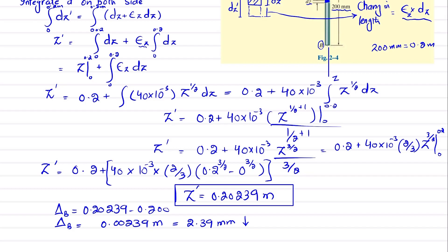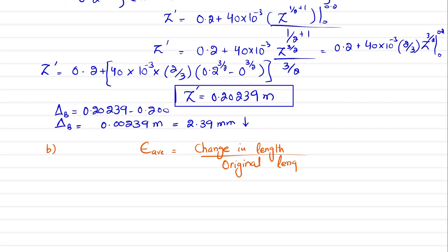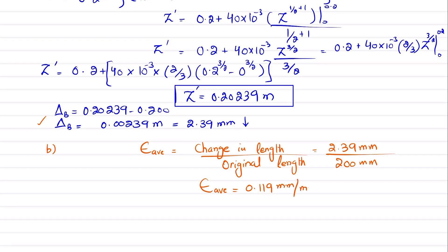Now for the next part, we solve for the average normal strain in the rod. The average normal strain equals change in length divided by original length. The change in length is delta_B = 2.39 mm, and the original length is 200 mm. So the average normal strain = 2.39 / 200 = 0.0119 mm/mm. This strain is a dimensionless quantity.